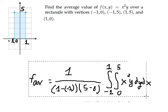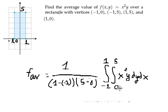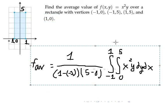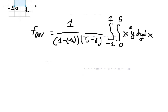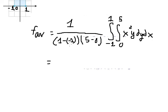We need to calculate this iteration. One minus negative one gives us two, and two times five gives us ten. So the coefficient out front is one over ten.